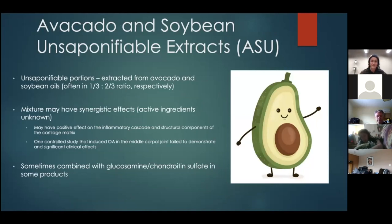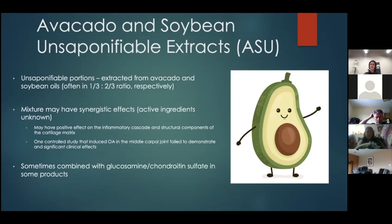Avocado and soybean unsaponifiable extracts (ASUs) are extracted from avocado and soybean oils. In supplements they're found in roughly a one-third avocado to two-thirds soybean oil ratio. The mixture is thought to have synergistic effects, but we don't actually know what the active ingredient is yet. This is where studies lack controls and labeling can be confusing.